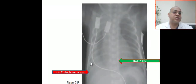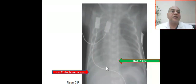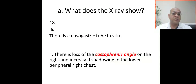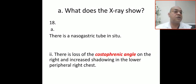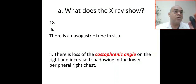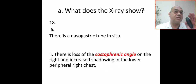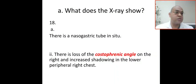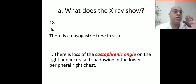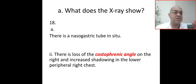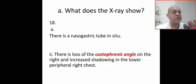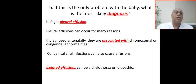What does the X-ray show? As we discussed, there is a nasogastric tube visible, and there is loss of the costophrenic angle indicating pleural effusion on the right side, along with increased shadowing in the lower peripheral right chest. This is the answer to the first question.